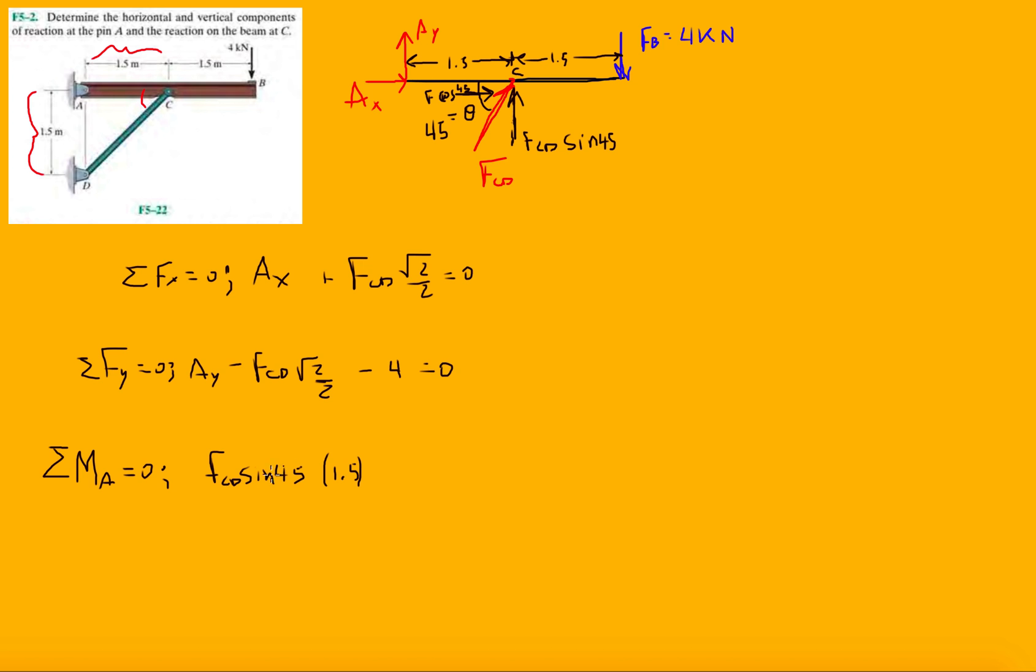And then which direction is it going? It's going positive, so it's trying to make it, it's trying to push it up. So we're trying to make it rotate counterclockwise. Well, thanks. Now the next thing is we have one more force, which is the 4kN force, and that's trying to make it rotate clockwise. So that will be minus 4 times 3 for the distance. That's equal to 0. And now this will allow us to solve for FCD.